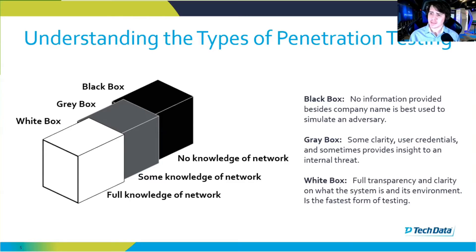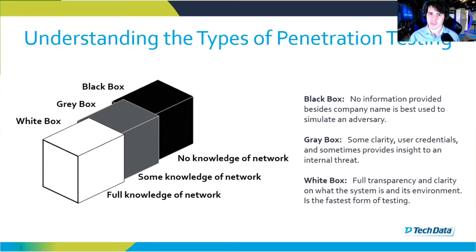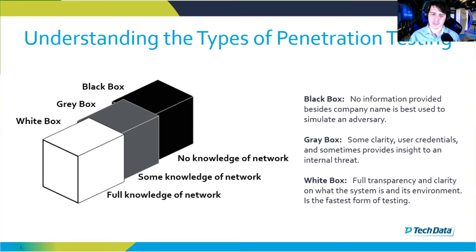Gray box testing is a mix between the black box and the white box tests. This can sometimes be used to understand internal threats, as typically some sort of employee credentials or sometimes admin credentials are given. A little more information is given to the tester — they could be getting credentials or a little bit of a network layout — but the goal is to give some information, not all. This is good for simulating an internal threat because employees typically don't have all the access unless they're at the top level or in the C-suite. For example, a CISO would have high level access while a standard employee may not.